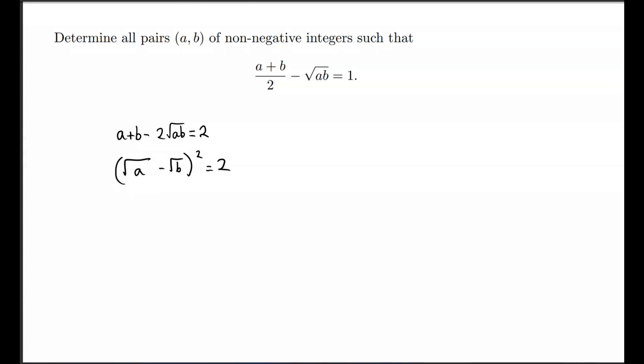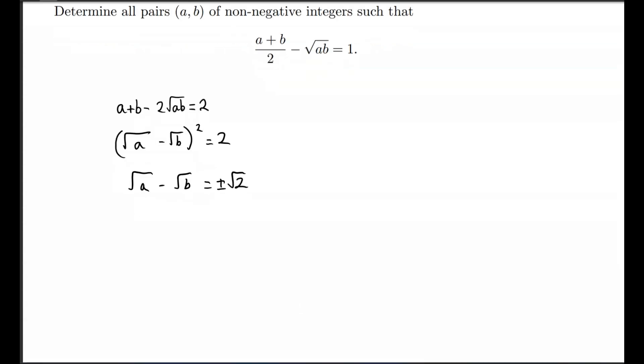Now we take the square root of both sides to get √a - √b = ±√2. And now we have two cases.